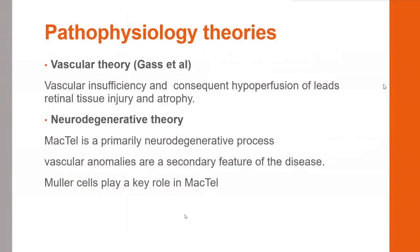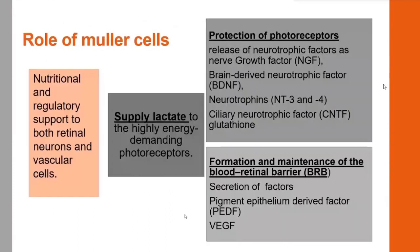Regarding pathophysiology, according to Gass et al.'s vascular theory, vascular insufficiency and consequent hypoperfusion lead to retinal injury and atrophy. However, the currently most accepted theory is the neurodegenerative theory — that macular telangiectasia is primarily a neurodegenerative process and vascular anomalies are a secondary feature of the disease. Muller cells play a key role in MacTel.